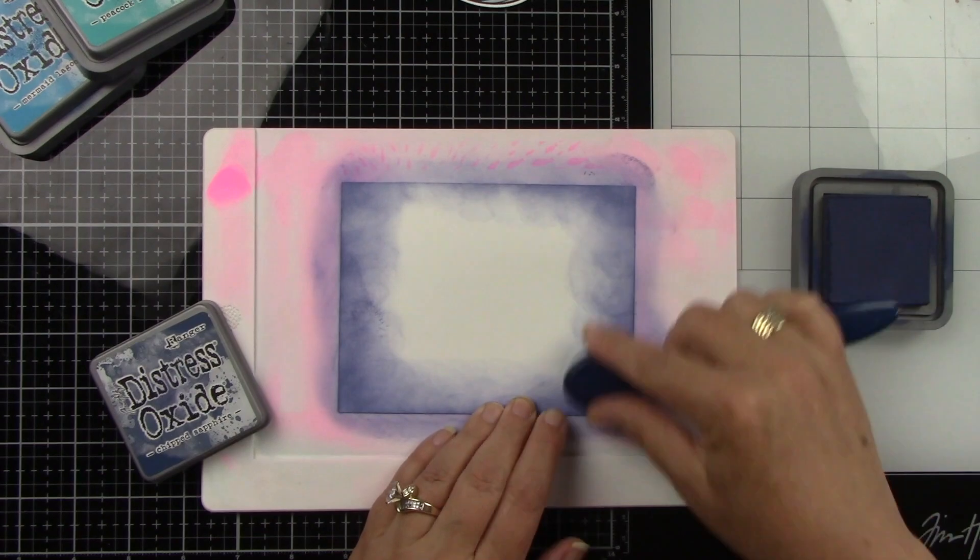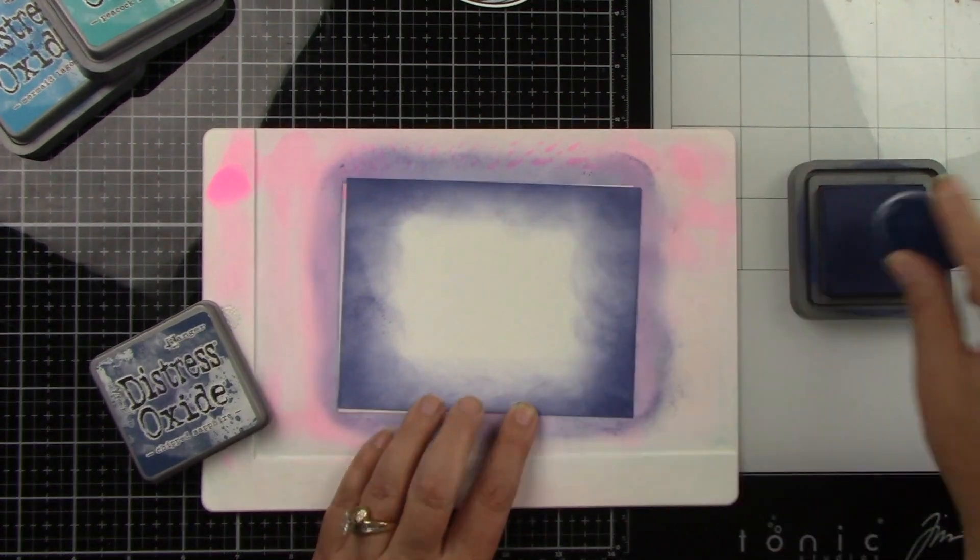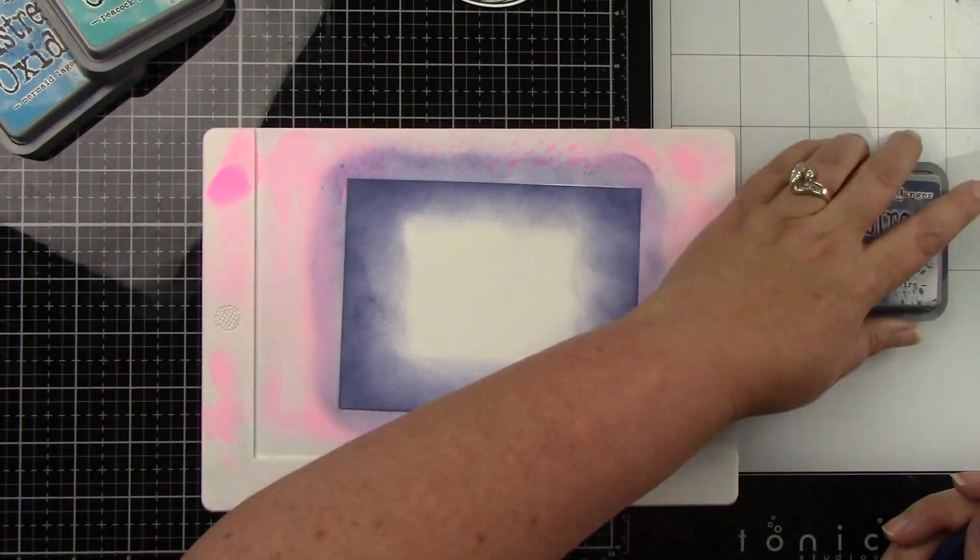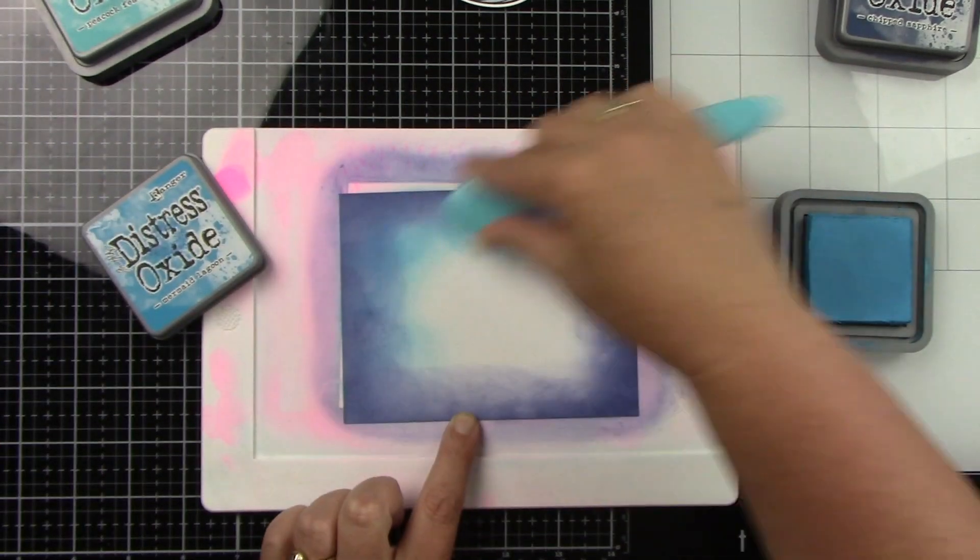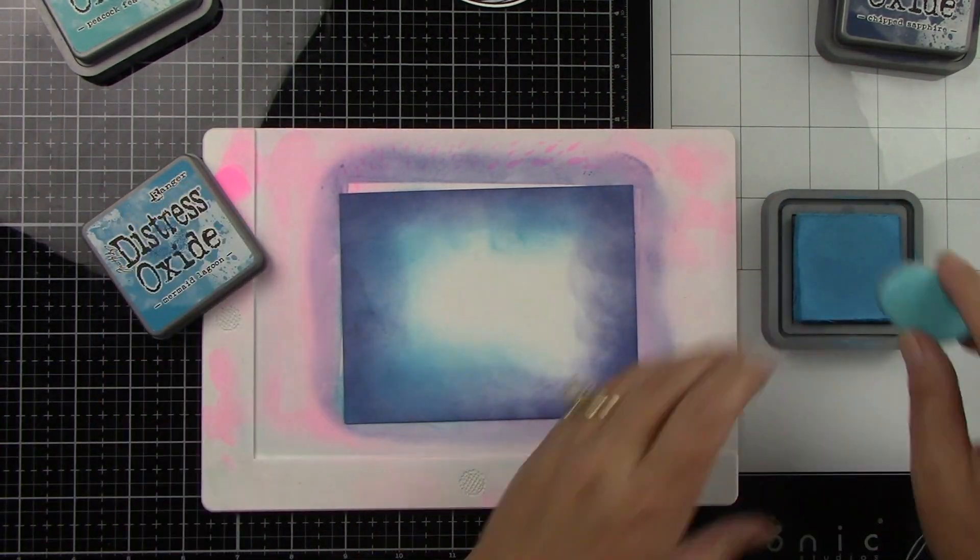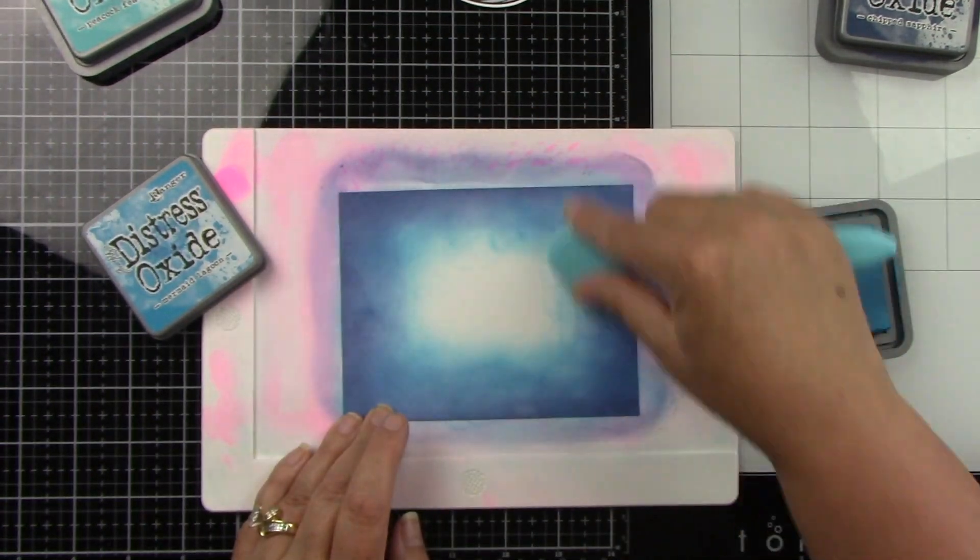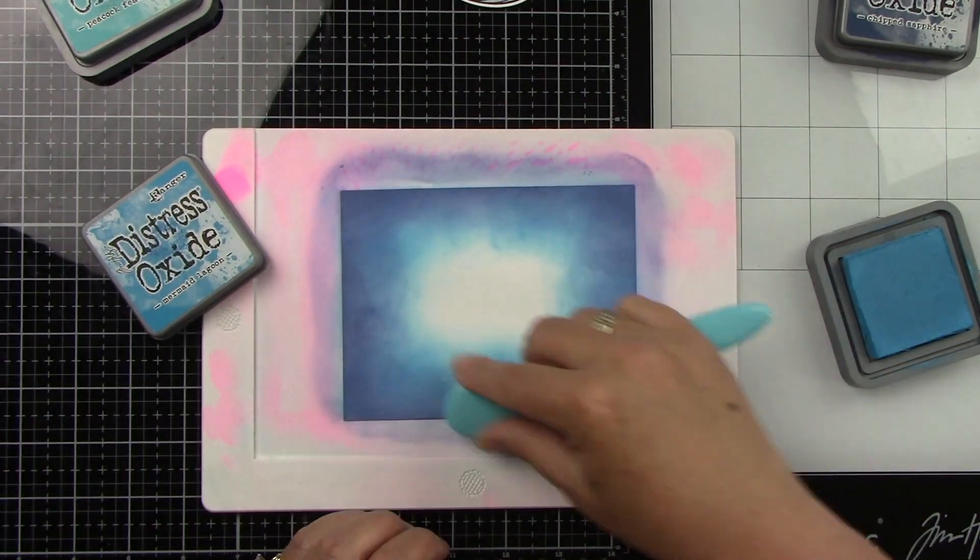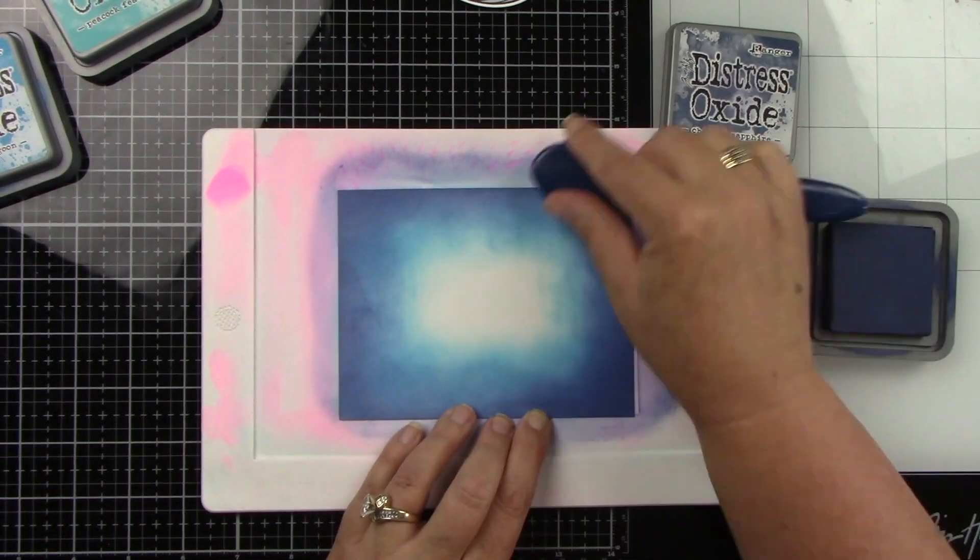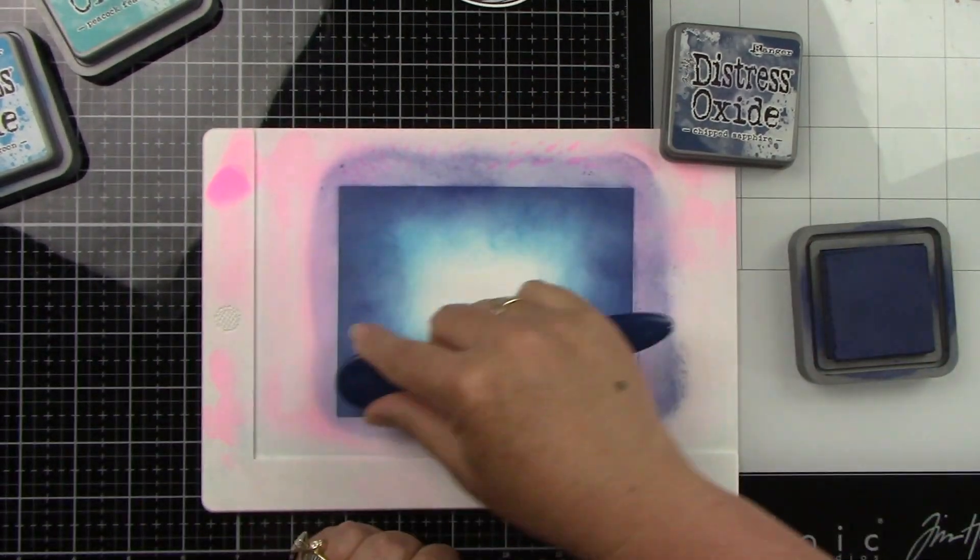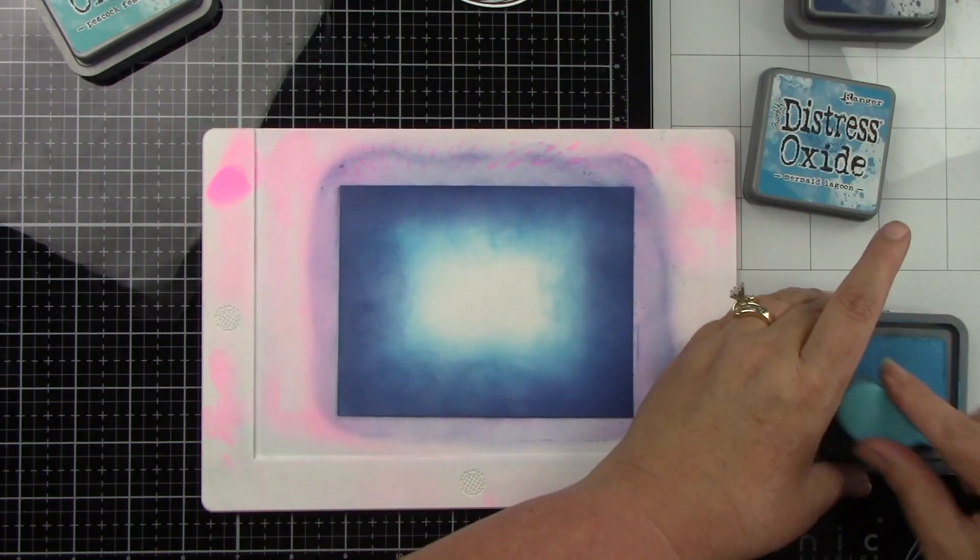This is an A2 size card. I'm starting with some white cardstock and I'm using distress inks in Chipped Sapphire, Peacock Feathers, and Mermaid Lagoon. I will be using some Black Soot for the stencil but those blue colors are what I'm using for the underwater scene. I want the center to be a little bit lighter so I'm starting with the Chipped Sapphire on the outside.